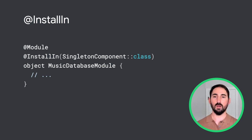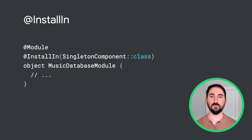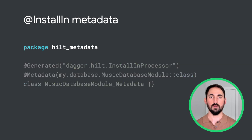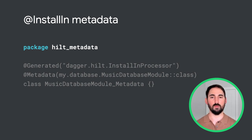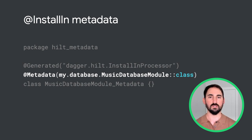With InstallIn, a module or entry point can be contributed from anywhere within the transitive dependencies of your application. However, at some point we'll need to collect all of the InstallIn contributions to get the full set of modules and entry points for each component. Hilt generates metadata to make collecting these InstallIn contributions easier. By putting the metadata into a fixed package, Hilt's processors can easily find the metadata generated in all transitive dependencies of your application. From there, we can use the information contained in the metadata annotation to find a reference to the InstallIn contribution itself — in this case, the MusicDatabase module.